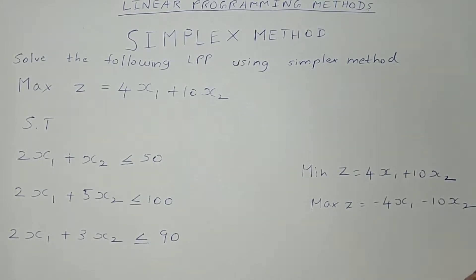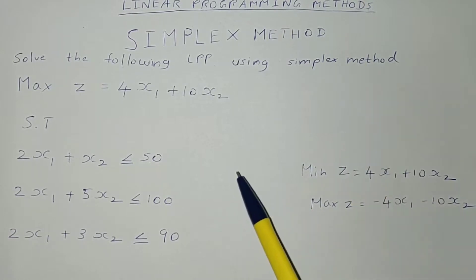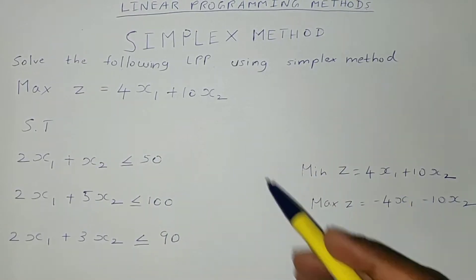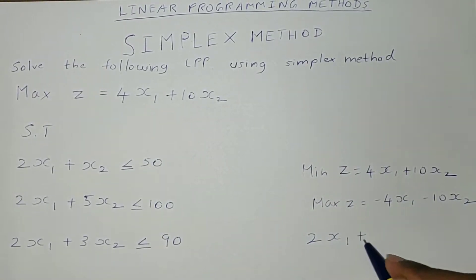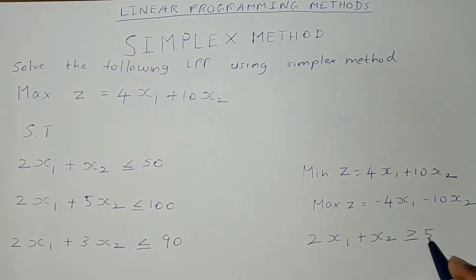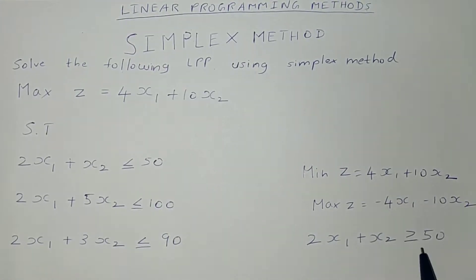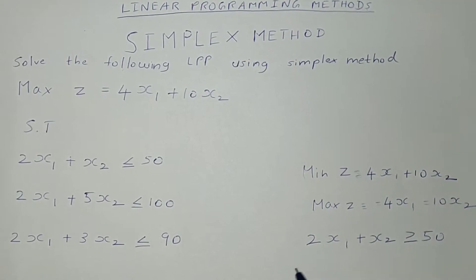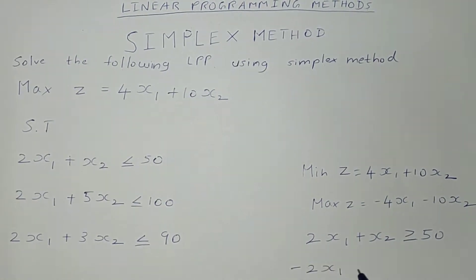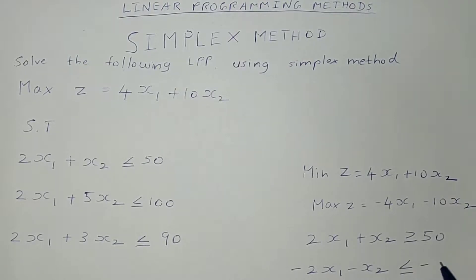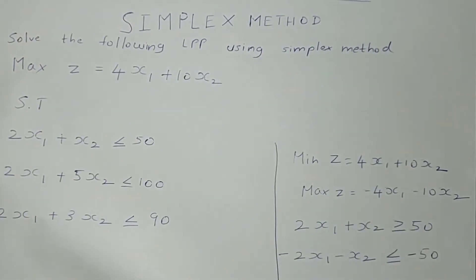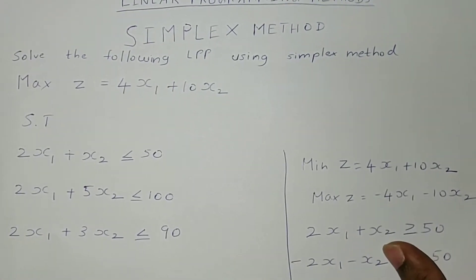The second condition is that suppose if there is a greater than or equal to symbol in the constraints — say 2x1 plus x2 greater than or equal to 50 — you have to convert it to a less than or equal to inequality by multiplying the whole equation by minus 1. So it becomes minus 2x1 minus x2 less than or equal to minus 50. After doing this, you can proceed to the problem solving steps.